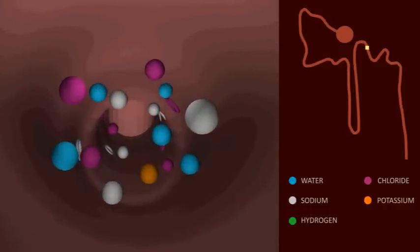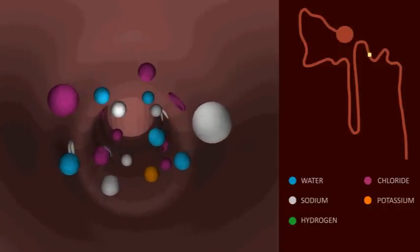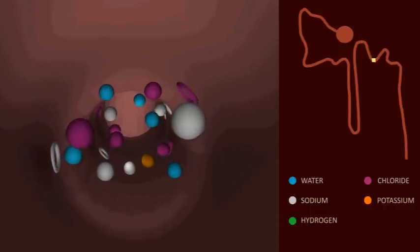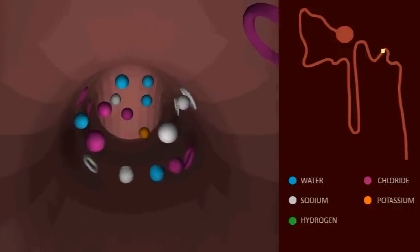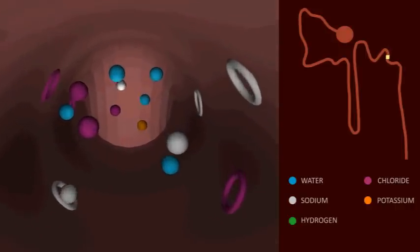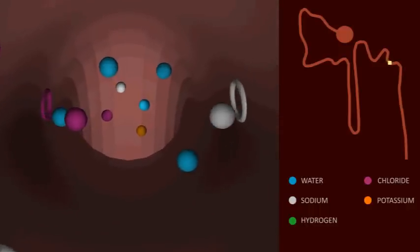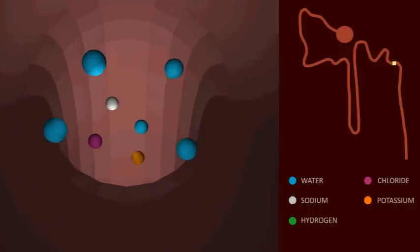5 to 10% of sodium reabsorption occurs in the distal connecting tubule through the sodium channels ENAC and NCC. This region does not have aquaporin water channels and therefore its permeability to water is low. Here, sodium leaves the filtrate but water does not.